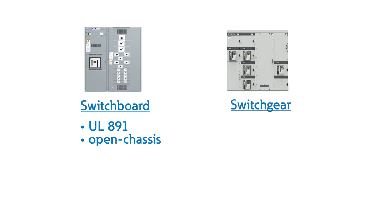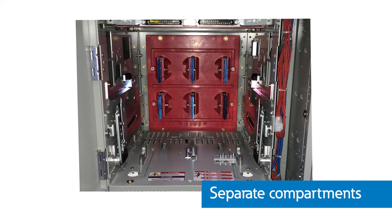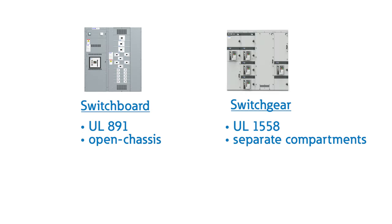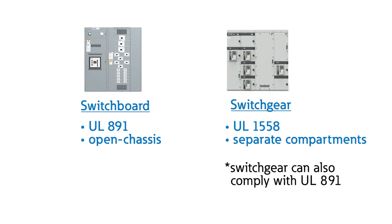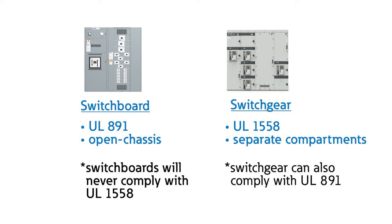This differs from switchgear, which, under UL1558, requires separate compartments to shield and isolate each section from another. Because of this structural difference, switchgear can be designed to fulfill UL891 switchboard requirements, but switchboards can never satisfy UL1558 switchgear standards.